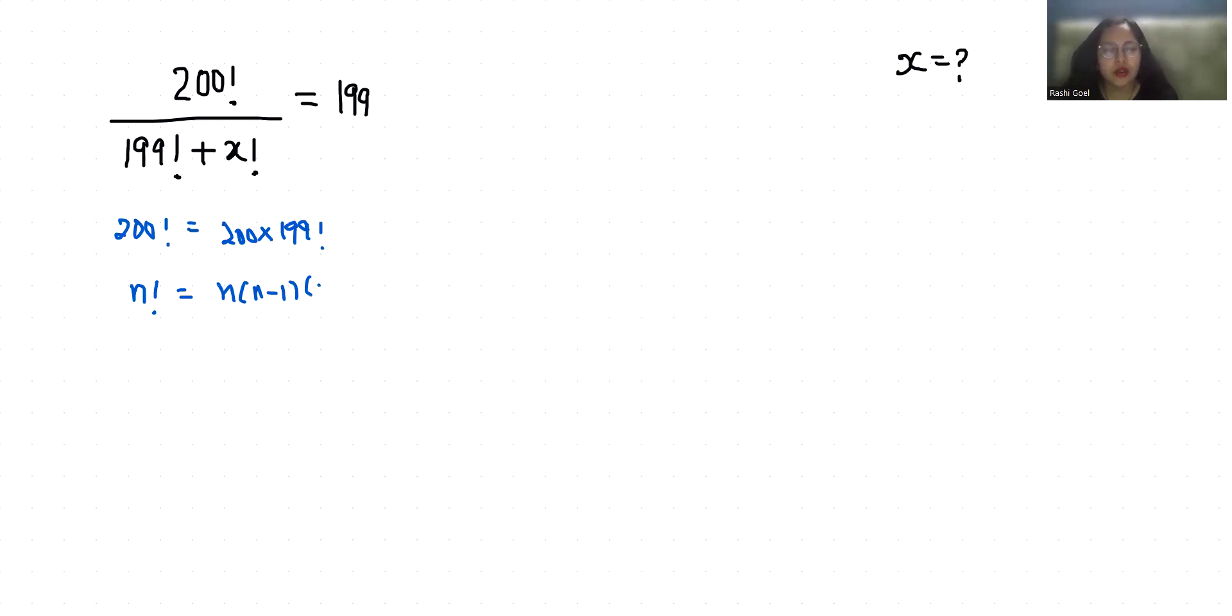So the formula for n factorial is n times (n minus 1) factorial. Now the numerator is 200 times 199 factorial equals 199, and if I take the denominator to the other side, we get 199 factorial plus x factorial.